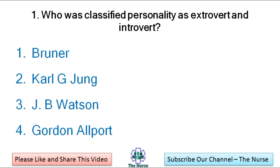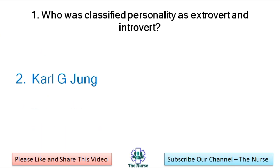First question: Who classified personality as extrovert and introvert? Options: Brunner, Carl G. Jung, JB Watson, Gordon Allport. Correct answer: Carl G. Jung.